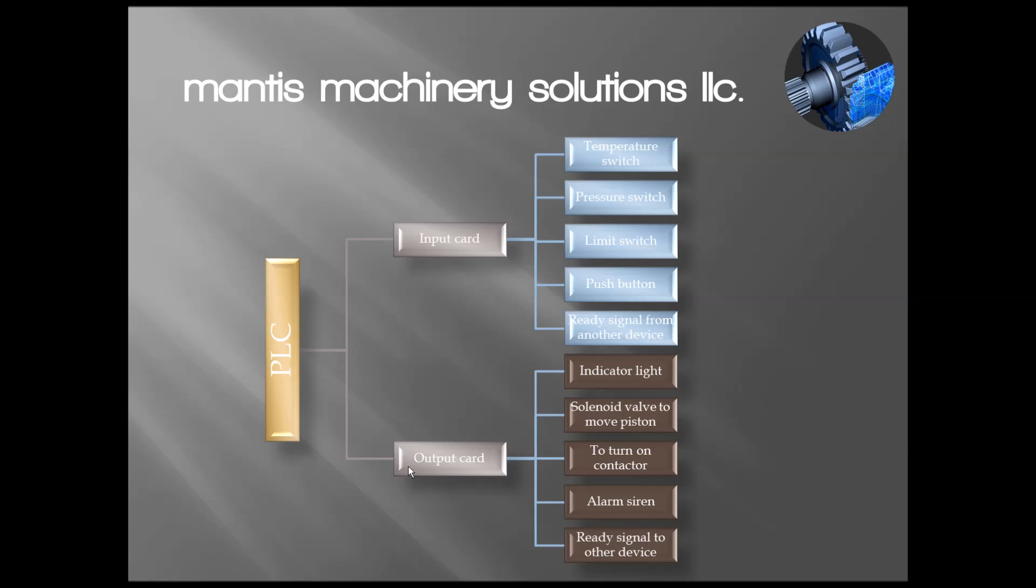Then we have an output card. On the output card, we have all the outputs - a signal going to an indicator light, a solenoid valve to move a piston, something to turn on a contactor that might start a pump or motor, an alarm siren, maybe a ready signal to another device. We're going to have all of the inputs going into a centralized location and all the outputs coming from a centralized location. That's all done within the PLC itself in the software.